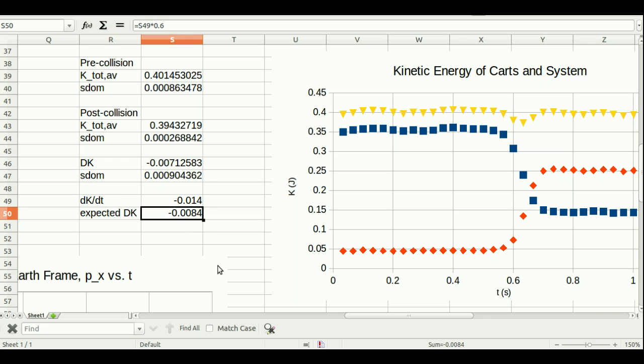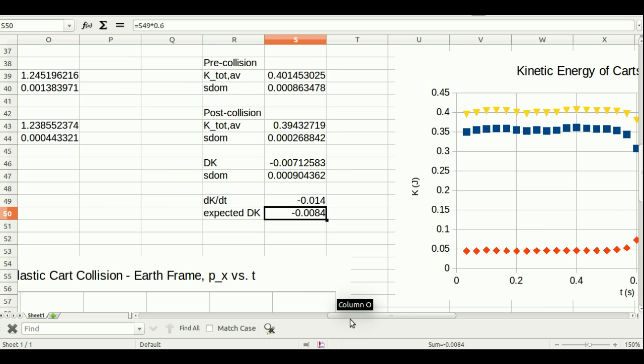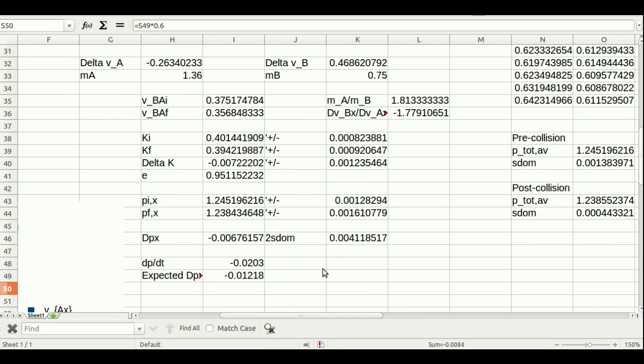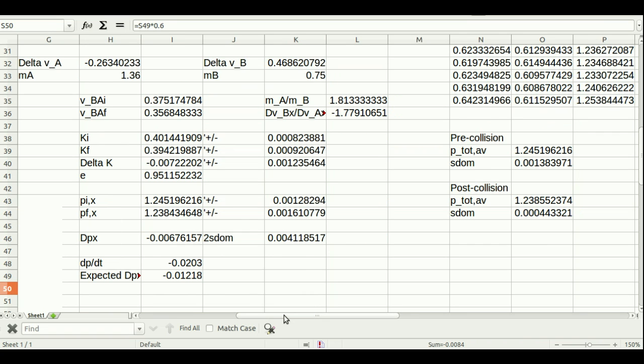Again I can multiply that by about 0.6 seconds and get the expected change in the kinetic energy. It's about 8.4 millijoules and the actual change in kinetic energy I see is about 7.2 millijoules. So I can again conclude that the loss in kinetic energy I see in this system is just due to the friction not because of anything happening in the collision. So this looks like an awfully elastic collision.